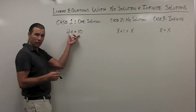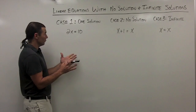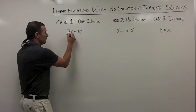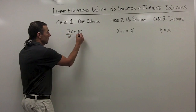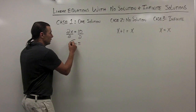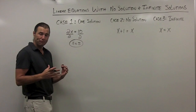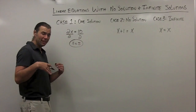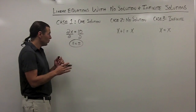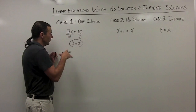I've written a very simple equation here: 2x equals 10. When we go to solve this equation, we would divide both sides by 2, and we find that our solution is x equals 5. That indicates that 5 is the only number that's going to be a solution to this equation.